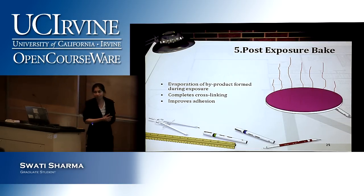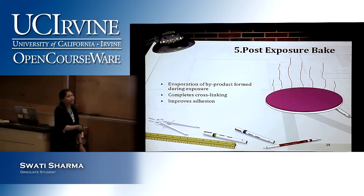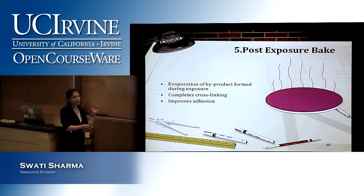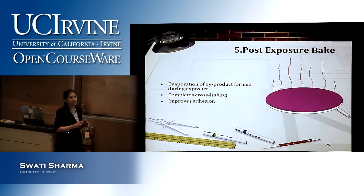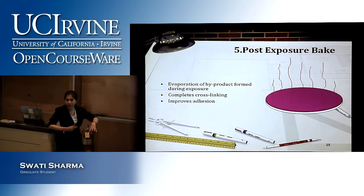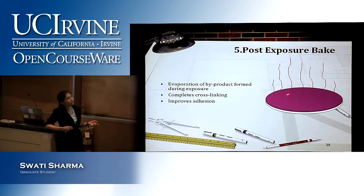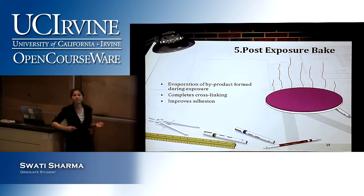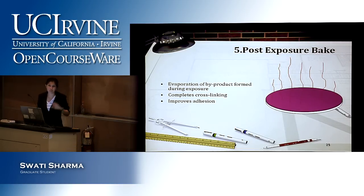The next step is the post-exposure bake. Some processes may skip this, but for SU-8 it is critical. When you expose SU-8 to UV light, it only initiates the photo generators — the actual cross-linking happens during the post-exposure bake through heat treatment. It also improves adhesion. For other polymers this step may not be required.